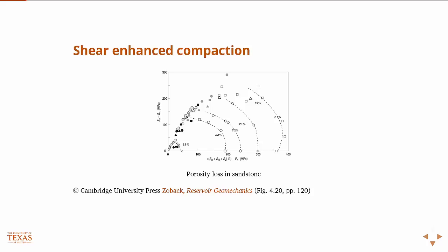What you see here on the bottom is a plot of the mean effective stress. This is the average of sigma 1, sigma 2, sigma 3—the mean effective stress, or effective mean stress, however you want to say it. Along the x-axis here, what we're really talking about is an increase in the hydrostatic pressure.